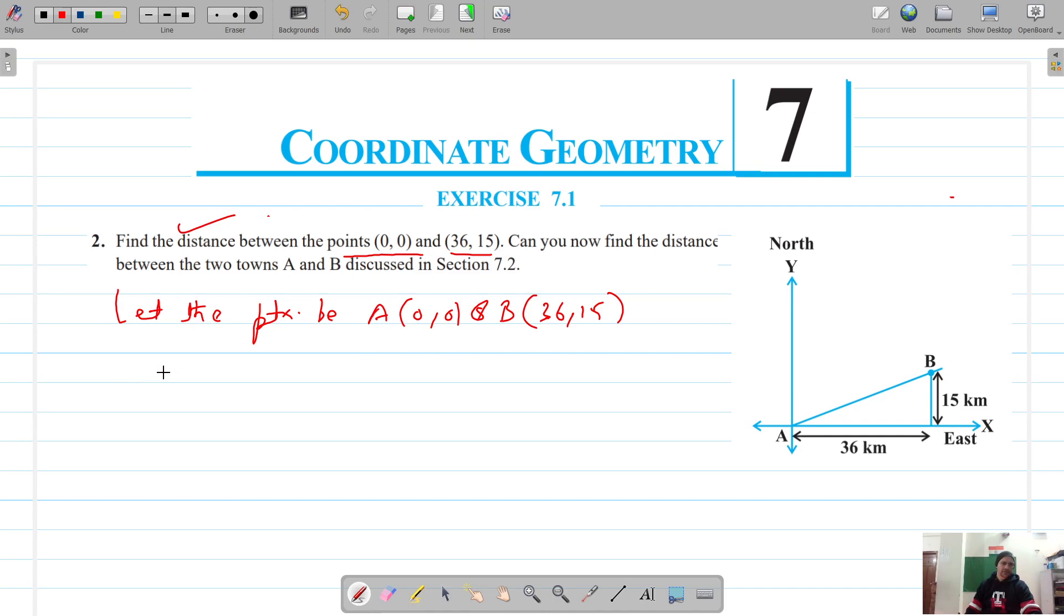So now the distance between two points will be AB, and that is given by the distance formula: square root of (x₂ minus x₁)² plus (y₂ minus y₁)². These coordinates are x₂, y₂, and these are x₁, y₁. So it gives me square root of (36 minus 0)² plus (50 minus 0)².